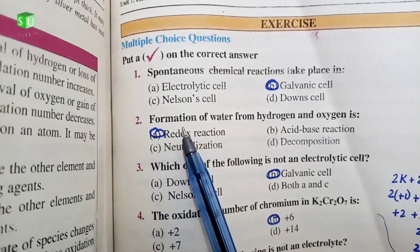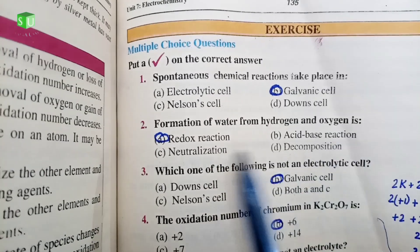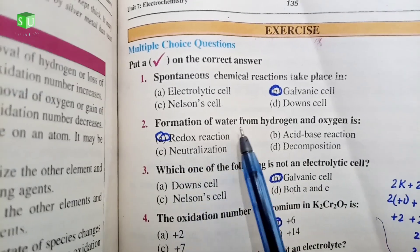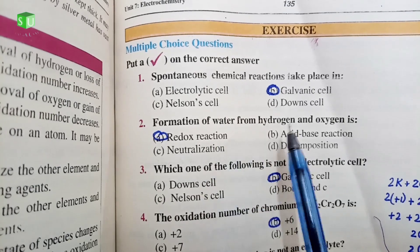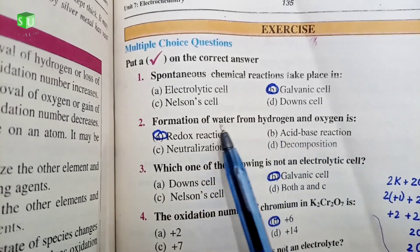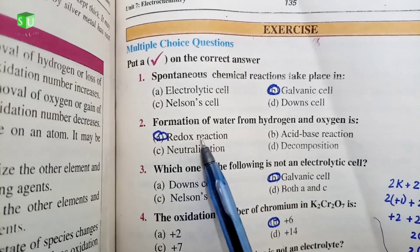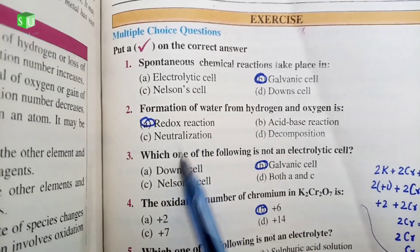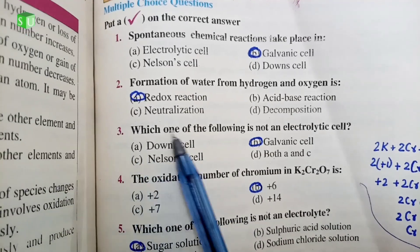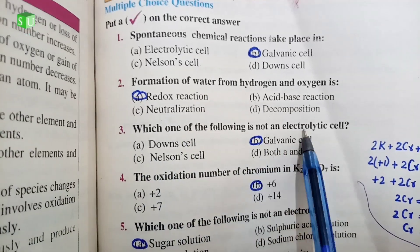Number 2 is formation of water from hydrogen and oxygen is a redox reaction. Water is H2O. This reaction is redox reaction. This reaction has reduction happening and also oxidation happening. Oxygen gains electrons.